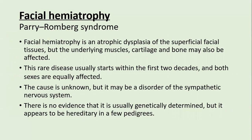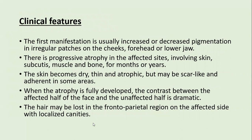Facial hemiatrophy, also known as Parry-Romberg syndrome, is atrophic dysplasia of superficial facial tissue, where the underlying muscle, cartilage, and bone may also be affected. It is a rare disorder seen in the first two decades, affecting both sexes equally. The cause is unknown but may be a disorder of the sympathetic nervous system. There is no evidence of genetic transmission, though it appears hereditary in a few pedigrees.